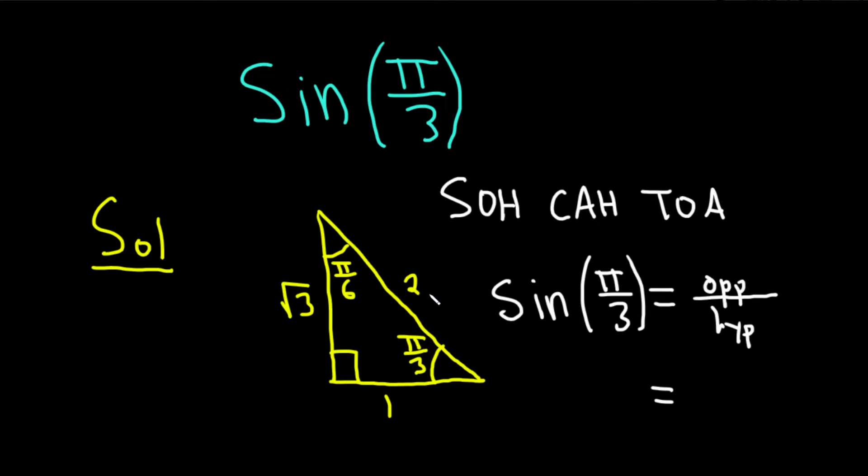So it's going to be opposite over hypotenuse: the square root of 3 over 2. The sine of pi over 3 is equal to the square root of 3 over 2.